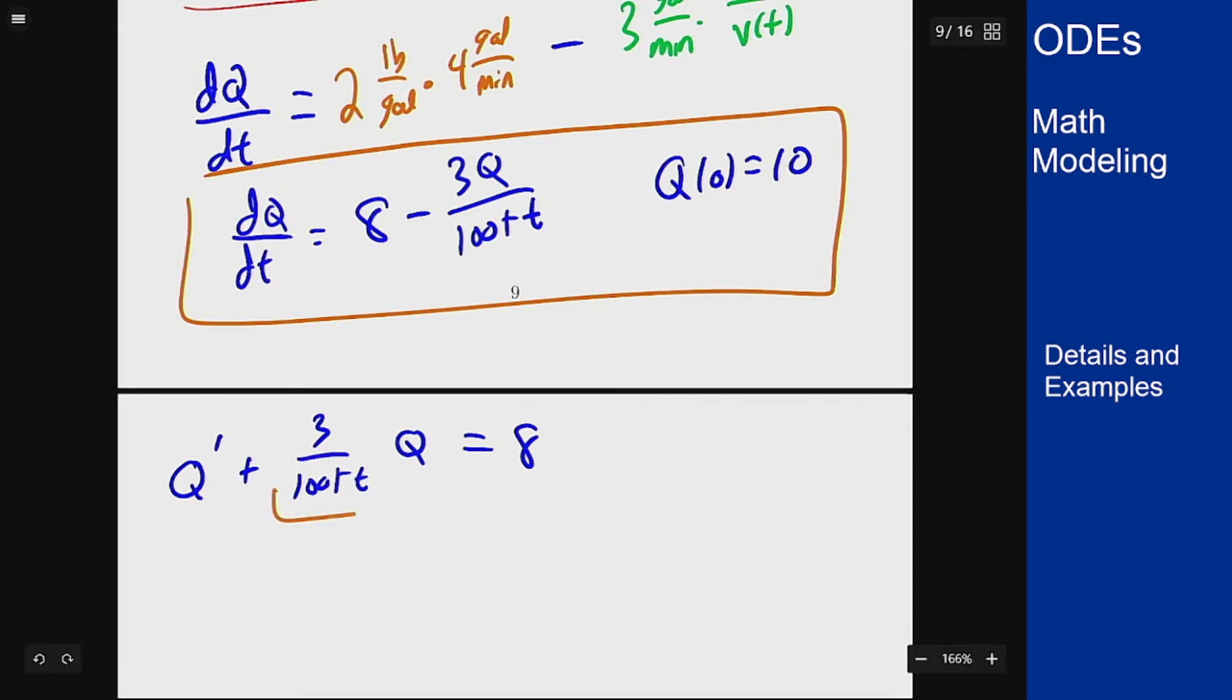I can go to find integrating factors using the coefficient function here to get that my function big P(t) is the integral of 3 over 100 plus t, which by a change of variables is 3 log of 100 plus t.